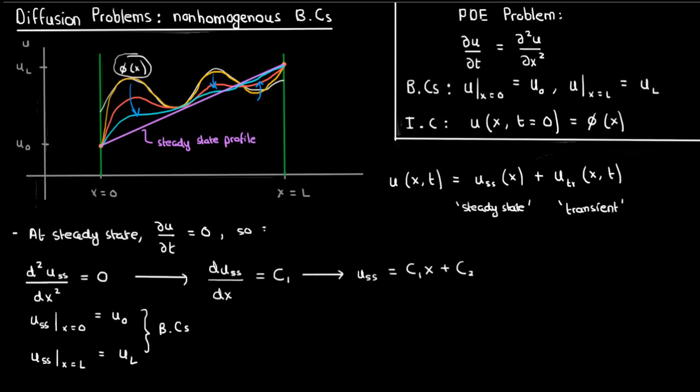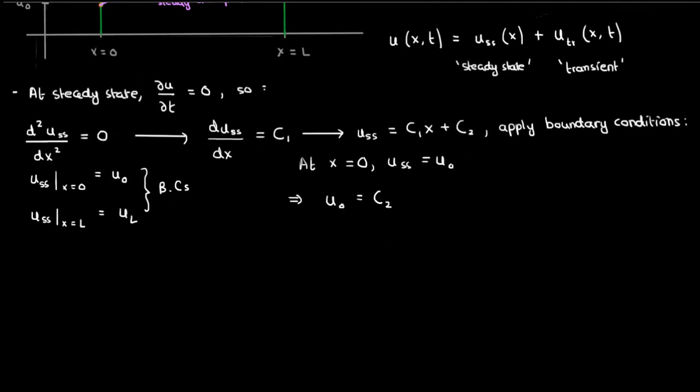To find the constants c1 and c2, you just have to apply the boundary conditions. So at x equals 0, u sub ss equals u0. So u0 equals c2, so c2 is u0.